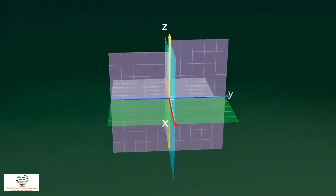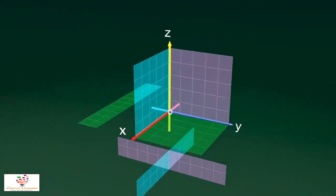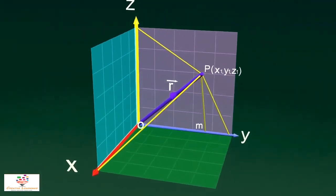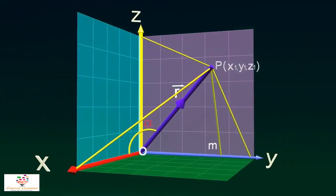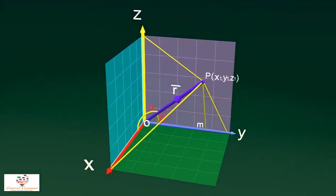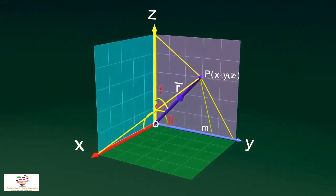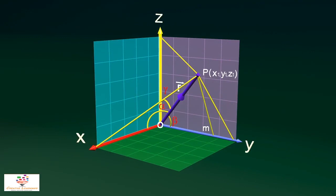In a three-dimensional coordinate system, consider a position vector OP of point P denoted by r. This vector makes an angle alpha with the positive direction of x-axis, makes an angle beta with the positive direction of y-axis, and makes an angle gamma with the positive direction of z-axis. Angles made by the vector with positive directions of x, y, and z-axis are called direction angles of the vector.